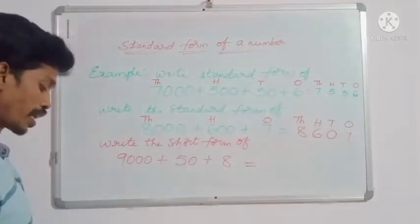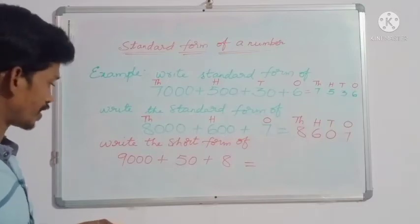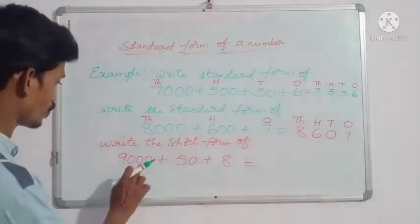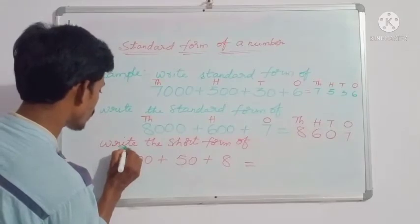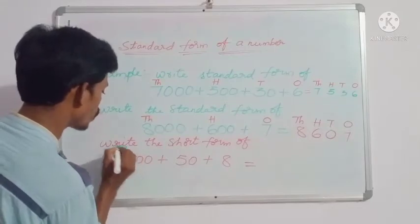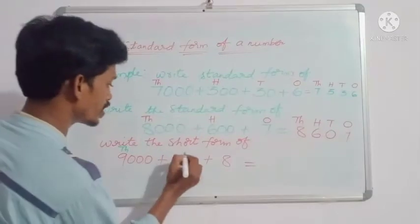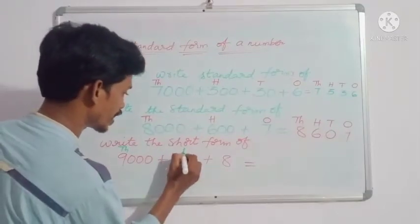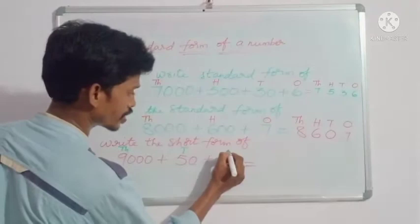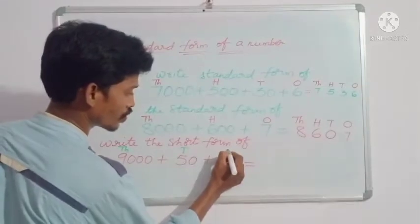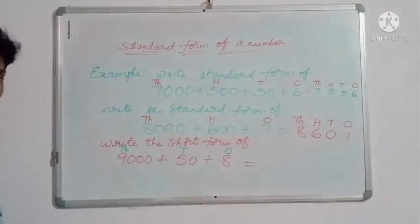How will you write it? First, you have to find the places: ones, tens, hundreds, thousands. Nine is in which place? Thousands place. Five is in which place? Tens place. Eight is in which place? Ones place. Now, what is the last place? Thousands. You have to write all places up to thousands.